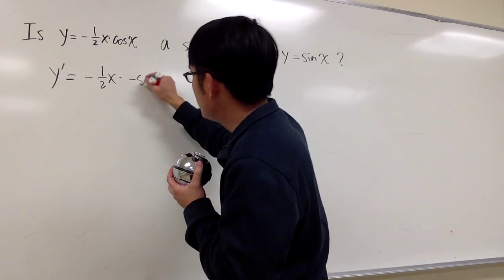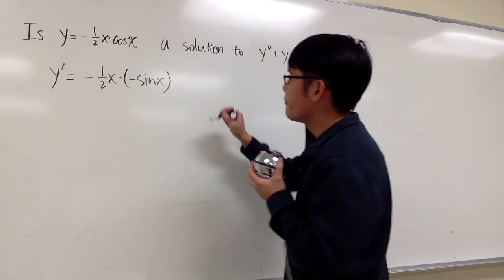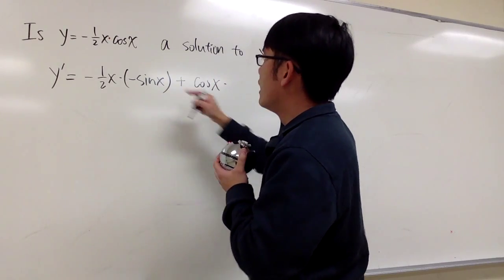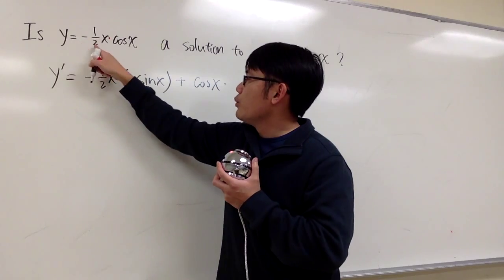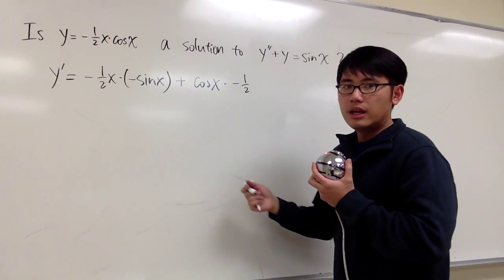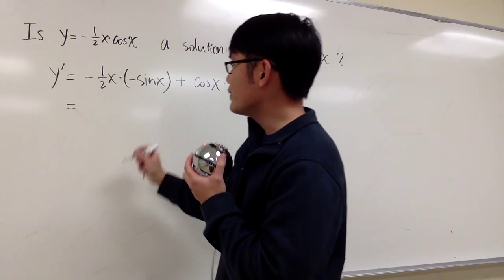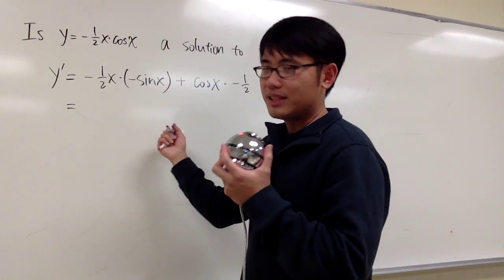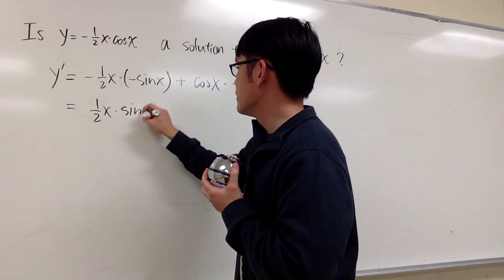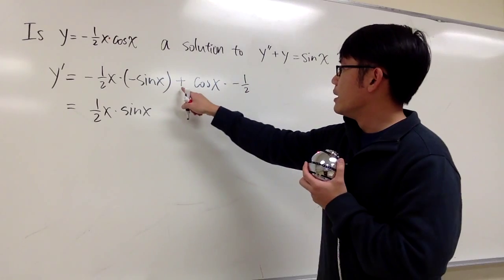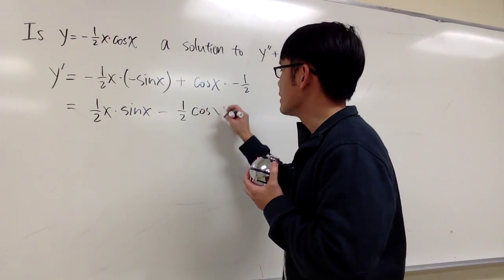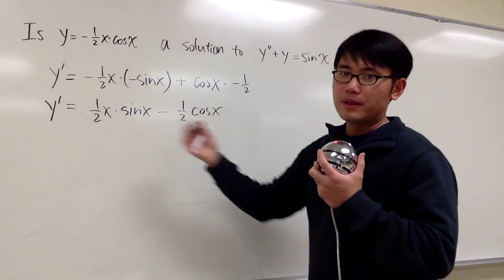The derivative of cosine x is negative sine x. And then I add the second function, which is cosine x, times the derivative of the first. The derivative of negative one-half x is just negative one-half. We can clean this up: negative times negative is positive, giving us one-half x times sine x, plus cosine x times negative one-half, which is minus one-half cosine x. So this will be a much more useful first derivative formula.